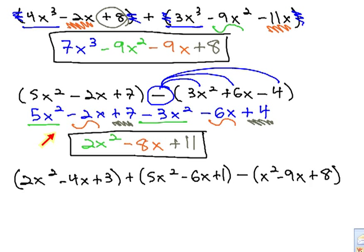Sometimes, we could even consider a problem that's got both in it. 2x² minus 4x plus 3 is added to the polynomial 5x² minus 6x plus 1, and then the polynomial is subtracted, x² minus 9x plus 8.